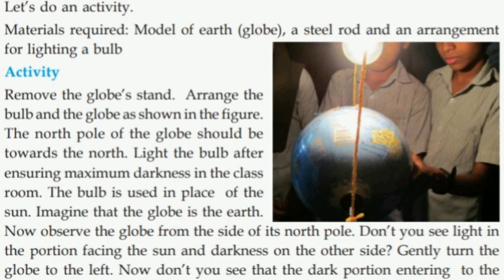The north pole is at the top. Turn the globe a little towards the dark place. When we turn the globe to the left, we can see the dark portion entering the lighted area and the lighted area moving into the dark area.